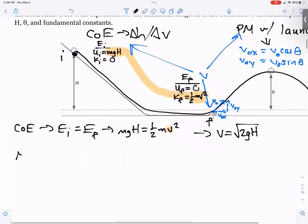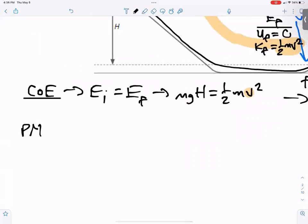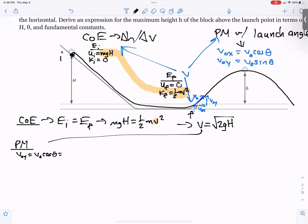Now for the projectile motion. I'm going to find v naught x and v naught y. So v naught x is going to be v naught cosine of your angle, which is the square root of 2gh cosine theta. v naught y would be v naught times the sine of the angle, which would be the square root of 2gh times the sine of theta.